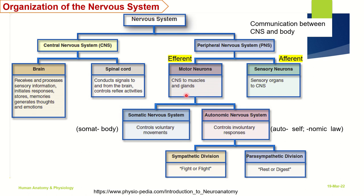taking the information from the CNS to the muscles and bringing the information from the muscles or the sensory organs to the CNS respectively. They are further classified into the somatic nervous system, which controls voluntary movements, and the autonomic nervous system, which controls involuntary responses.